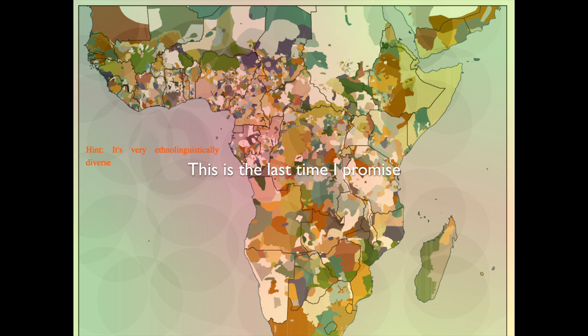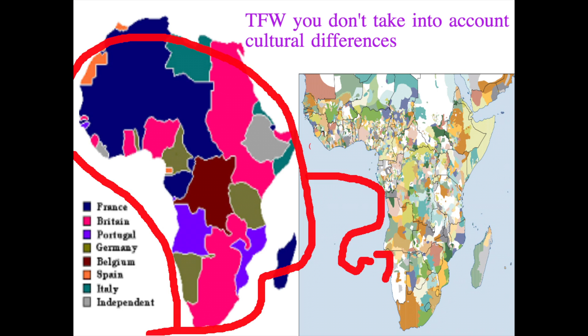Let's take another look at this map. We've got thousands of indigenous languages and ethnic groups across Africa. But looks like colonial powers decided to cut up African territory like a cake.